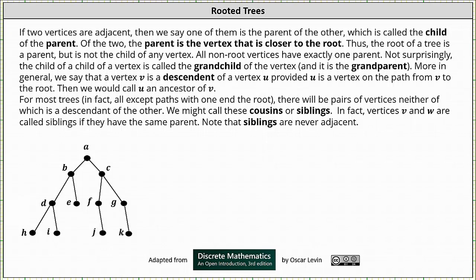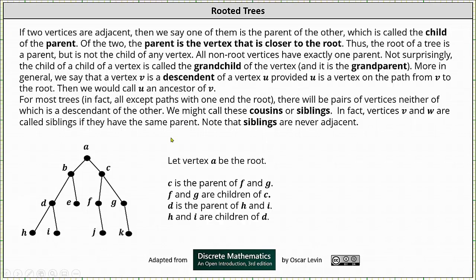If we take a look at the tree below and designate a as the root, notice vertices c and f are adjacent, as well as vertices c and g. Because c is closer to the root a, we say c is the parent of f and g, and f and g are children of c. Similarly, notice vertices d and h are adjacent, as well as vertices d and i. Because d is closer to the root, we say d is the parent of h and i, and h and i are the children of d.